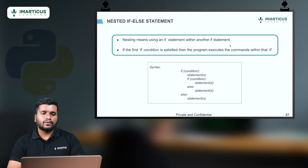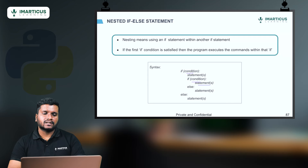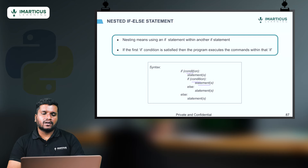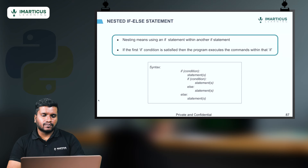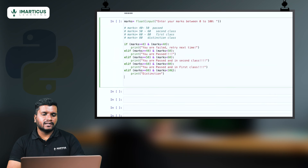This is our original marks program. Even when entering values above 100, it returned 'distinction,' which is wrong. I can use elif with 'marks greater than or equal to 80 and less than 100' to print distinction more precisely. When I run it and input 89, it shows distinction. But there's still a catch — entering a negative value like minus 1 also returns 'failed.'